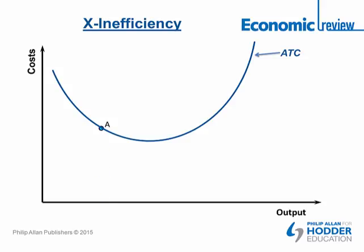Let's take point A, producing an output of Q1. If we take Q1 up to point A and read off the Y-axis, the cost of producing that output is C1. That tells us the cheapest average cost method of producing Q1 is C1 — we're using the best combination of factors of production, mixed in the most efficient and low-cost manner. The extra output we're getting from each input must be equal at this point.